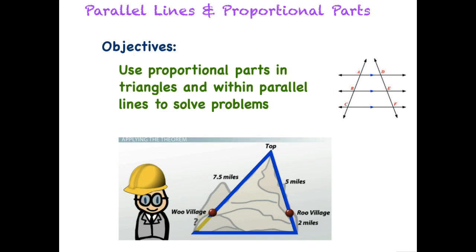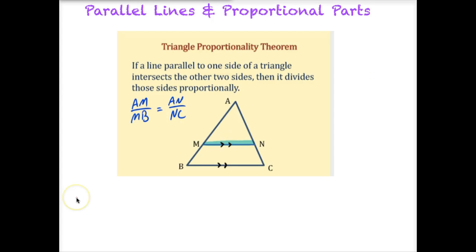Let's look at the theorem. The Triangle Proportionality Theorem states that if a line parallel to one side of a triangle intersects the other two sides, for example, MN in this diagram is a parallel line to BC, if it does intersect the other two sides, then it divides the sides proportionally.